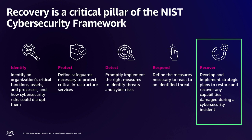The second pillar is protection — the safeguards you need to put in place to protect your critical infrastructure. The third is detection: implementing tools and services to identify threats in the first place. Fourth is responding — defining clear measures on how to react to a cyber event, who needs to be notified, and who pulls the first trigger to get recovery started. And lastly, recover: defining and implementing business continuity plans to restore and recover successfully during and after a cybersecurity event. As a reminder, an untested disaster recovery strategy is no disaster recovery strategy.